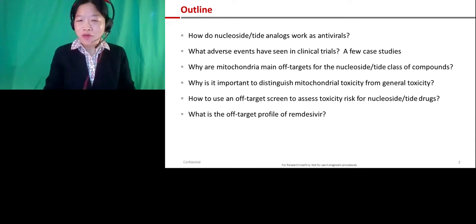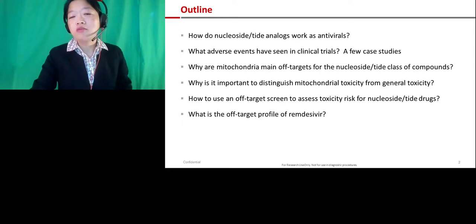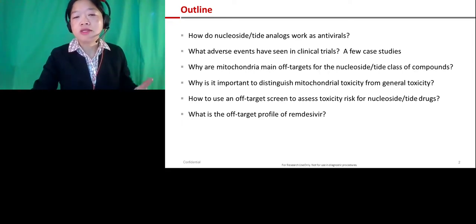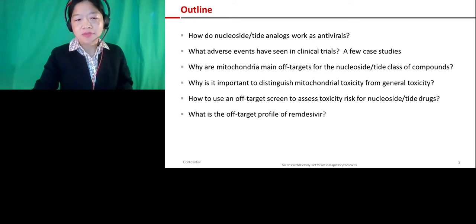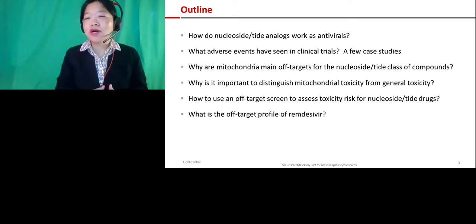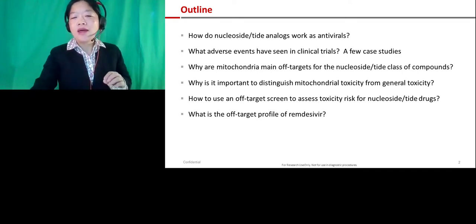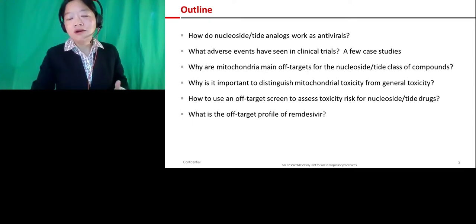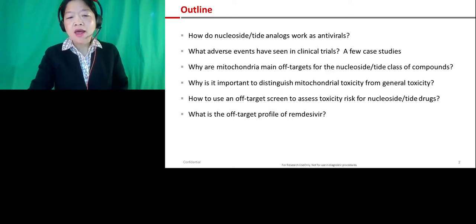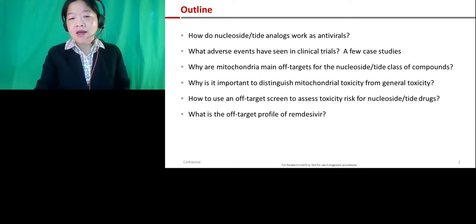The topics to cover are: what are nucleoside analogues, why they work so well as antivirals — they are the cornerstones of so many therapies we use to treat multiple viral infections — what effects we see in clinical trials, why mitochondria is one of the off-targets, why it's important to distinguish mitochondria-specific toxicity from general toxicity, whether we can screen for this toxicity early on even before preclinical animal testing, and finally how we evaluate Remdesivir within this screening paradigm.